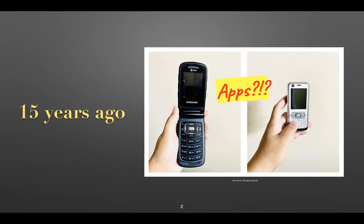2007 doesn't seem that long ago. Back then, convenience meant the ability to call anyone without being tethered to a cord. But texting meant having to punch a key several times to get the correct letter. To spell something as simple as 'cat,' you'd punch the number one key three times for C, once for A, and the number eight key for T.